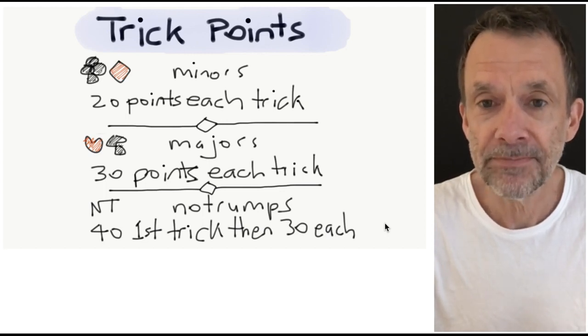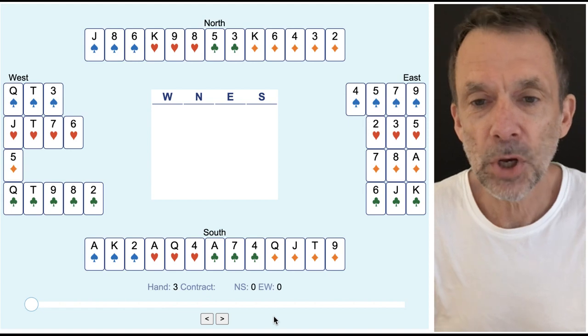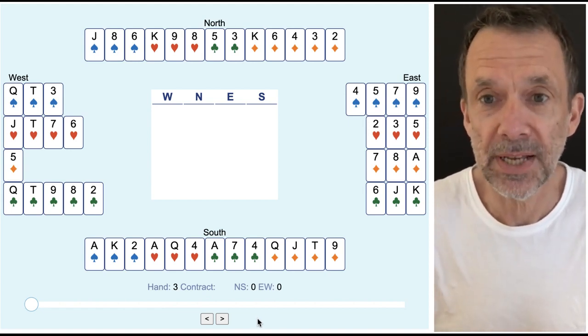I'm going to play a hand and if I make it then we're going to be able to calculate the score. I'm going to do this a little differently. I'm going to show you all four hands as we bid and play this hand.